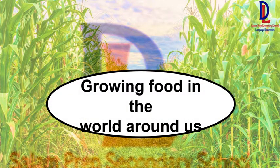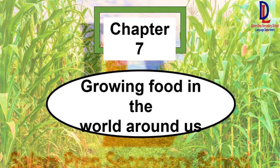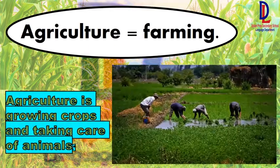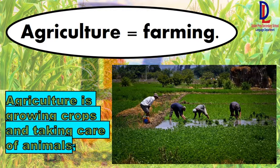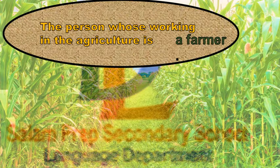Hello, my dear and smart students. Today we are going to continue Chapter 7: Growing Food in the World Around Us. We are going to talk about agriculture — the same meaning as farming. Agriculture is growing crops and taking care of animals. The person who works in agriculture is called a farmer.